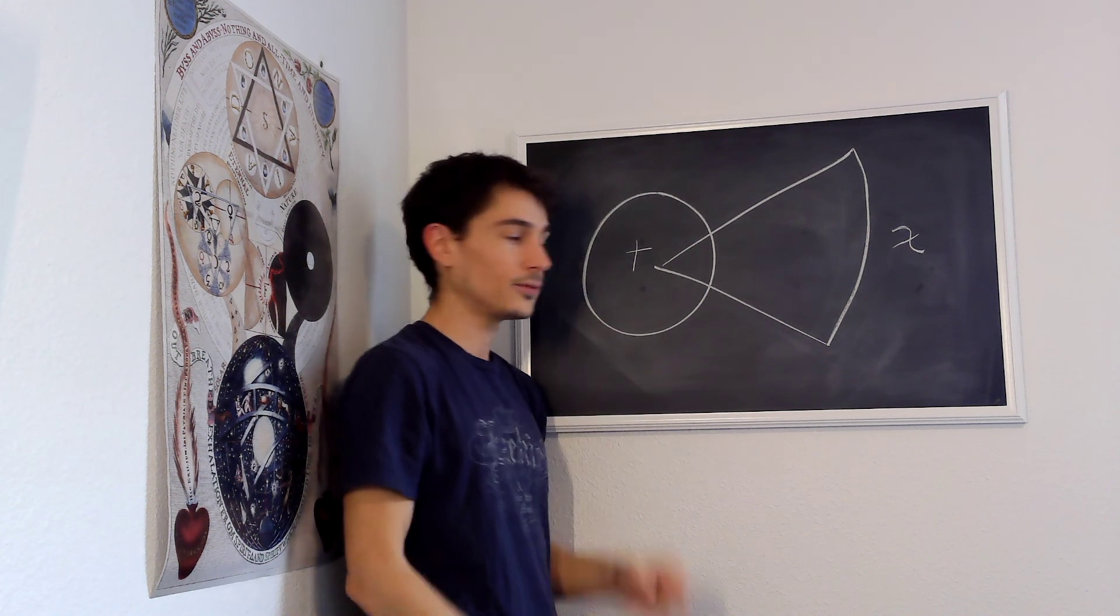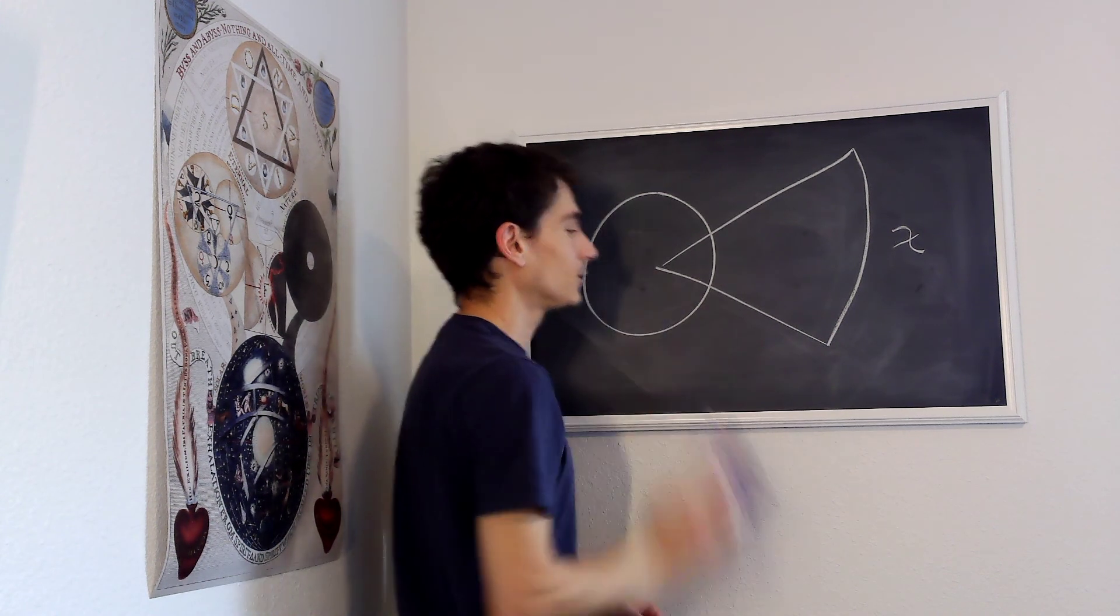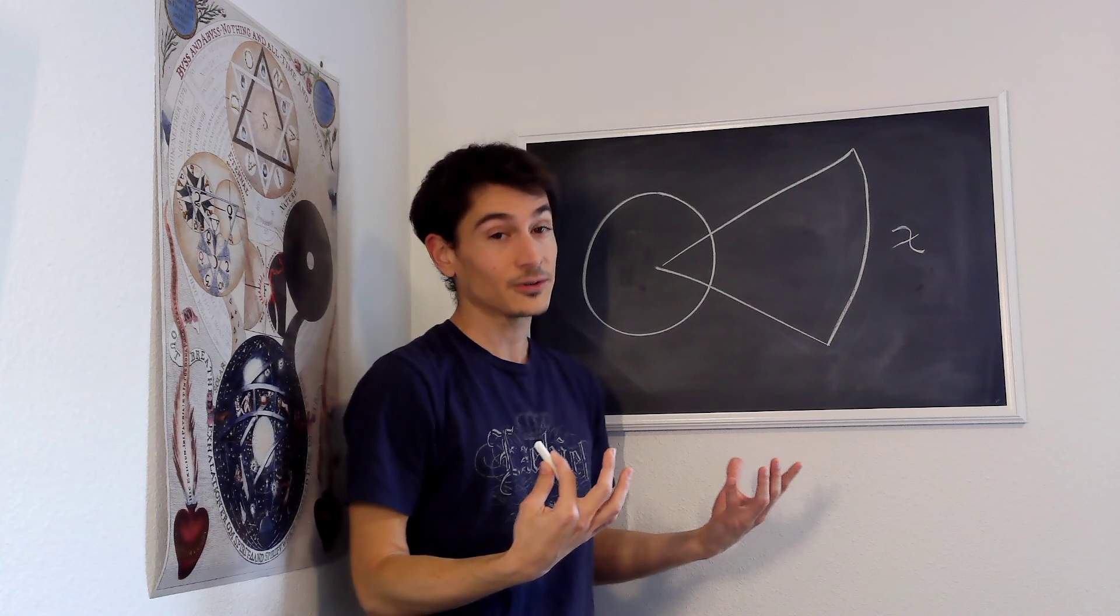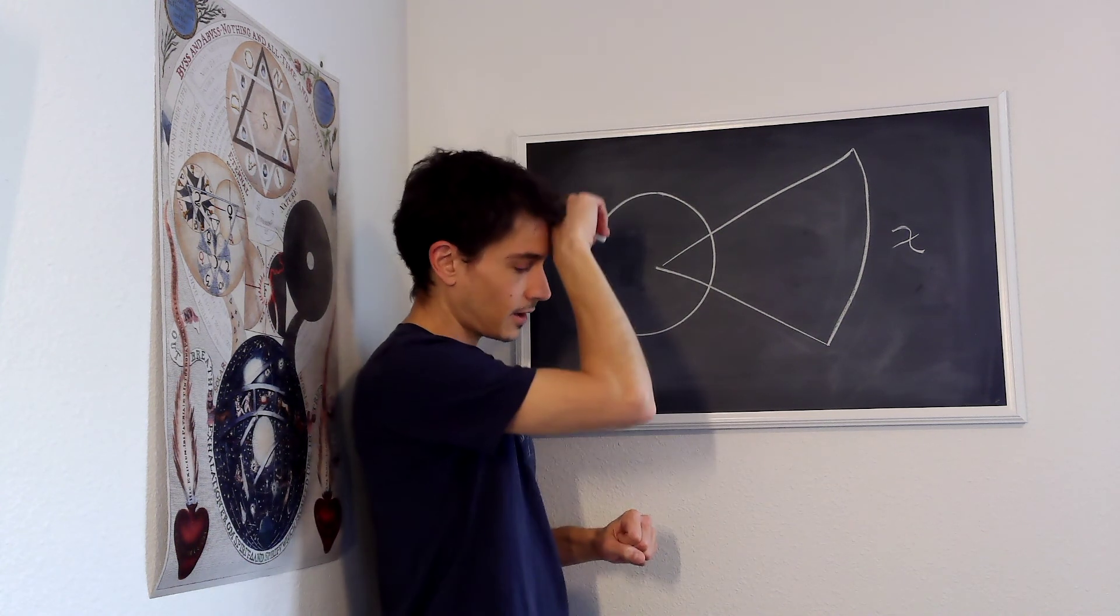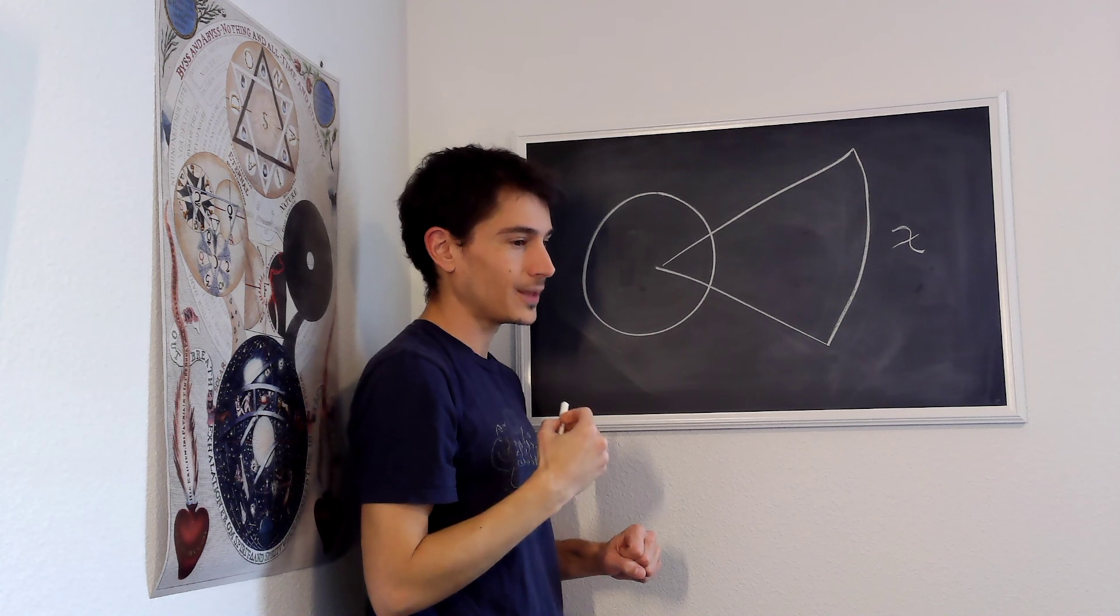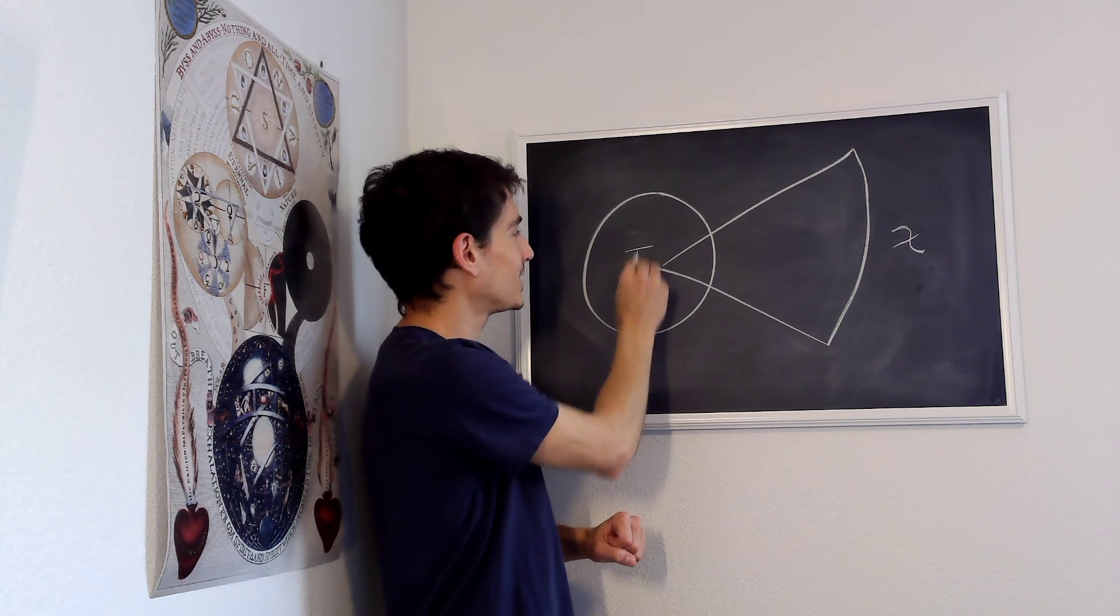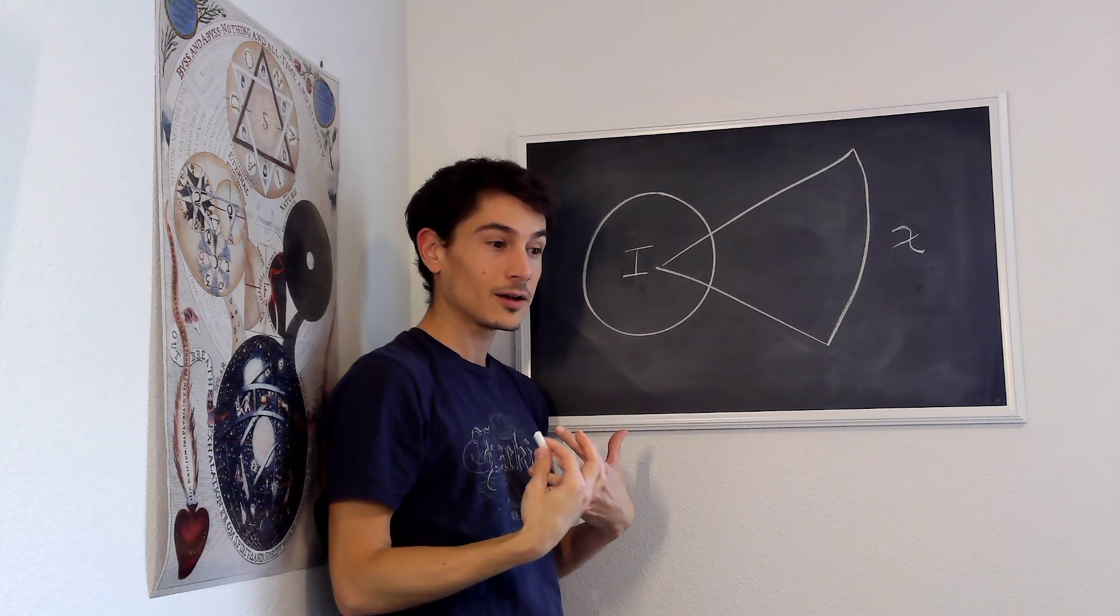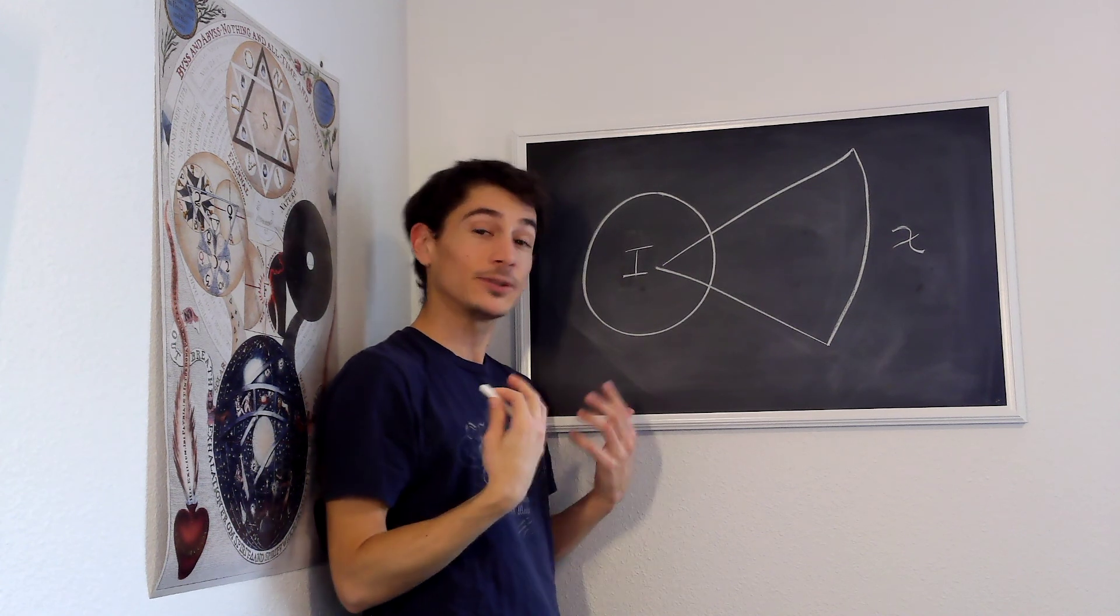I symbolize this with the crucifix. For Fichte, for all intents and purposes, this Christian form of morality, a rationalized form of Christianity that Kant articulates, is replaced by Fichte with the activity of the absolute self. So the crucifix becomes an eye. And this isn't the empirical or finite eye.